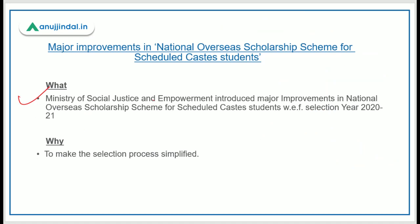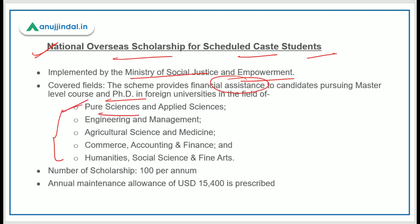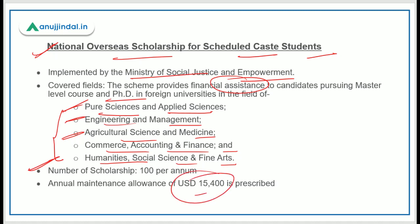The Ministry of Social Justice and Empowerment introduced improvements in the National Overseas Scholarship Scheme for SC students, effective from selection year 2020-21. The scheme provides financial assistance for master's or PhD programs in foreign universities in fields including pure and applied sciences, engineering and management, agricultural science and medicine, commerce accounting and finance, and humanities, social science, and fine arts. 100 scholarships per annum are provided, with an annual maintenance allowance of 15,400 US dollars.